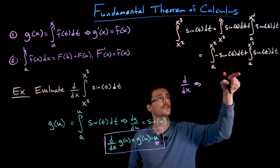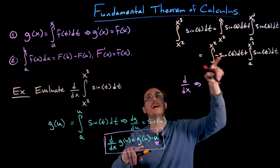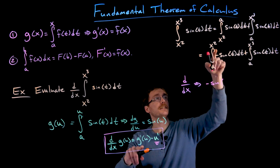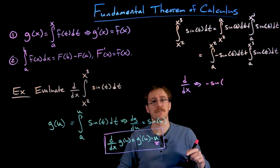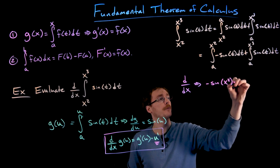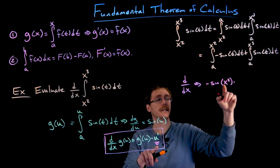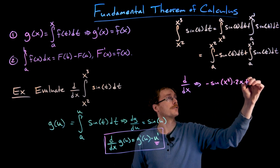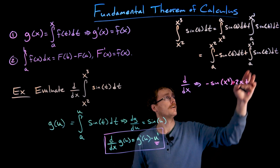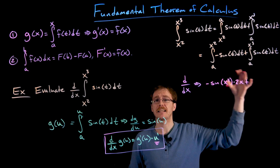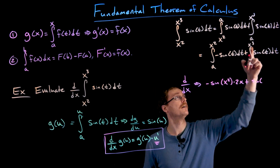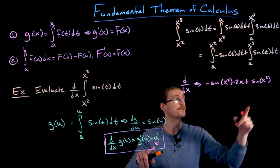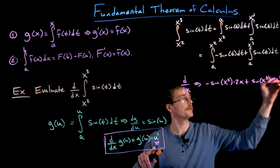We're not done because we also have to differentiate the second integral, and those steps are very similar. The differentiation cancels out the integral, but it gives us sine of x cubed — sine evaluated at the upper limit of integration. Then by the chain rule, we multiply by the derivative of x cubed, which is 3x squared.